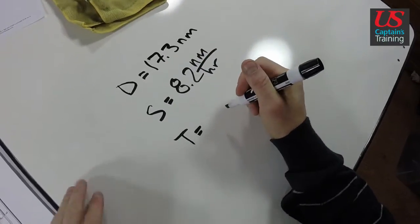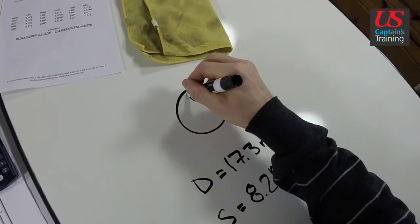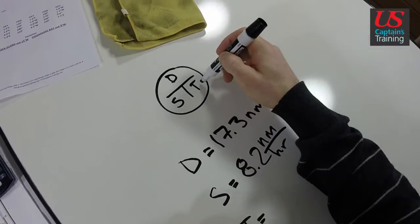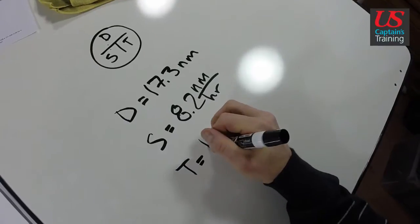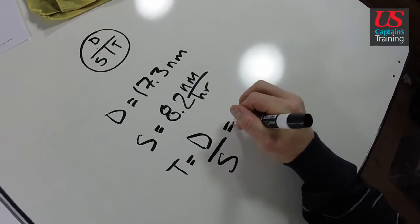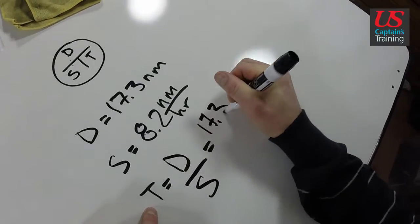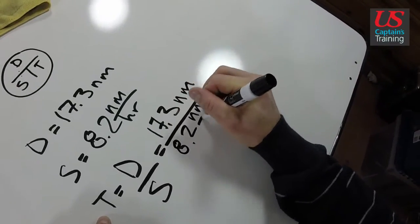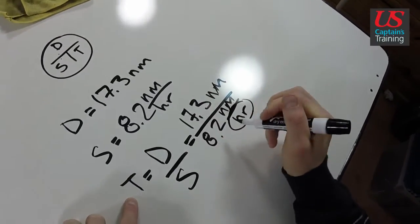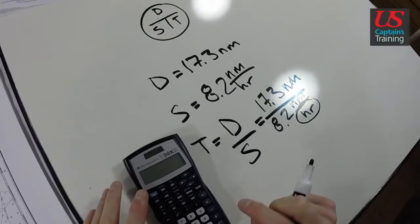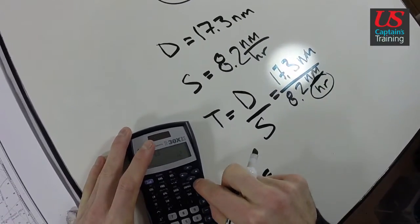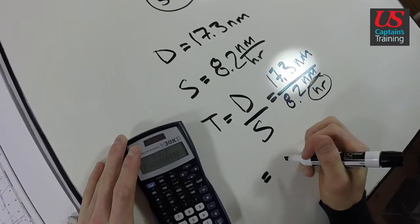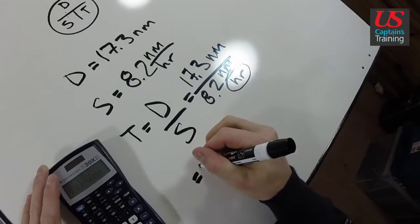Now we can find a time using the D-street formula. If you're not comfortable with this, you could say time equals distance divided by speed. Our distance is 17.3 nautical miles, our speed is 8.2 nautical miles per hour. These are going to cancel, you're going to be left with hours. So 17.3 divided by 8.2 equals 2.1109, so 2.11 hours.